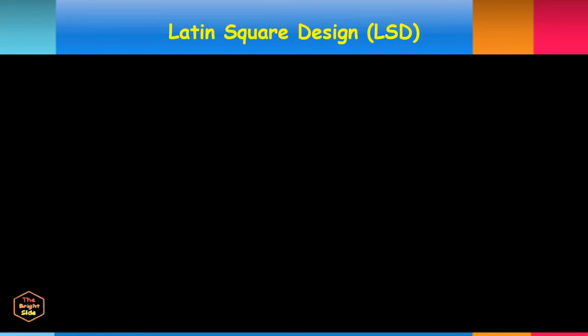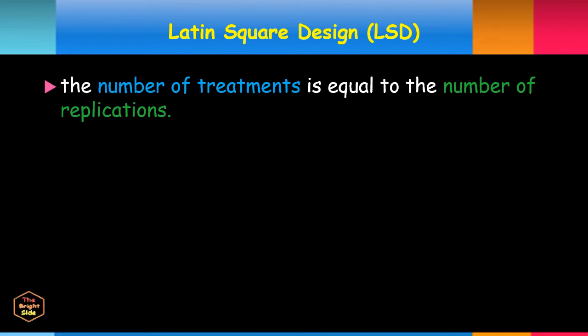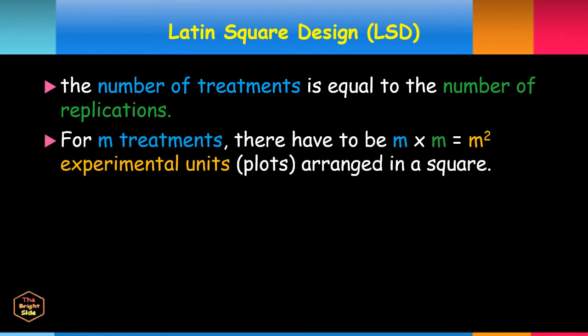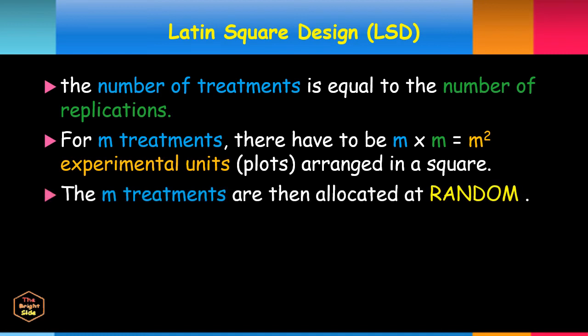Another experimental research design is the Latin Square Design or LSD. Here, the number of treatments equals the number of replications. For M treatments, there are M-squared experimental units arranged in a square. The M treatments are allocated at random to rows and columns such that every treatment occurs once and only once in each row and in each column.